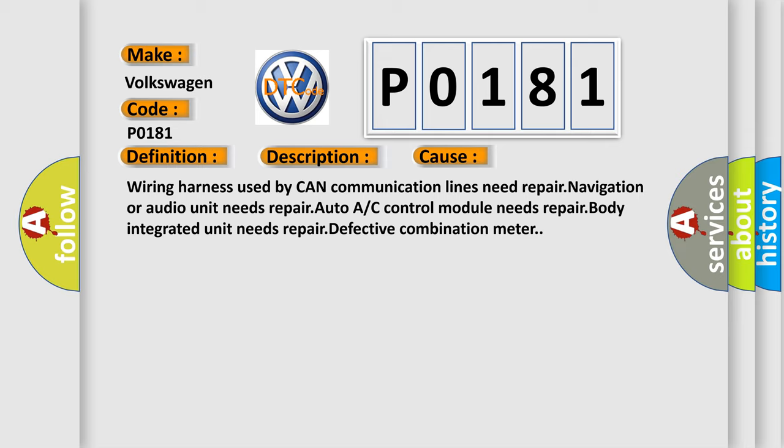Wiring harness used by CAN communication lines need repair, navigation or audio unit needs repair, auto A/C control module needs repair, body integrated unit needs repair, defective combination meter.